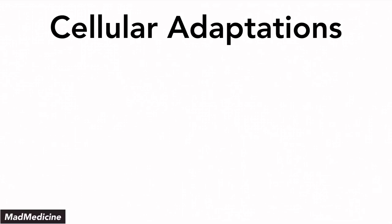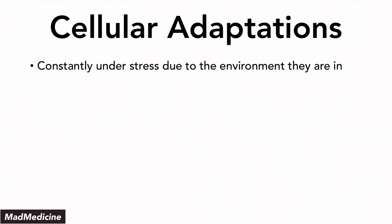Our cells are constantly under a stressful environment because of the nature of our body. They're going through a lot. An example of this would be the stomach lining. Our stomach lining is constantly exposed to our stomach acid, which is very erosive and it breaks down the stomach lining very easily. But our stomach lining has developed cellular adaptations to be able to manage the acidic environment that it is in. Now, that happens at a cellular level.